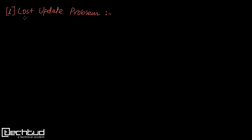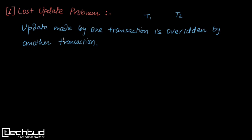As we can understand from the term itself, we are losing an update. Let's say we have transactions T1 and T2 being performed over a database. The lost update problem occurs when the update made by transaction T1 is overridden by another transaction T2. So the update made by T1 is lost — that's why we call it the lost update problem.